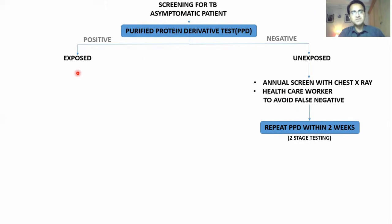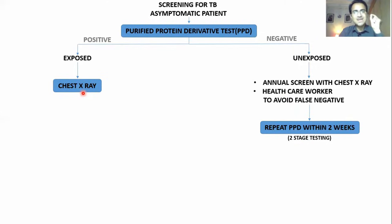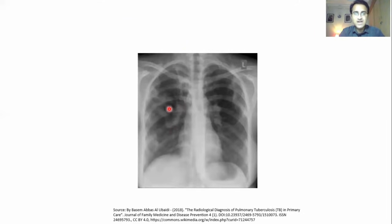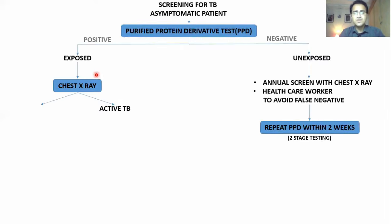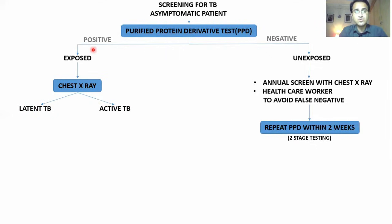If PPD is positive, it means the patient was exposed, but it does not mean the patient is actively having TB. To see whether this patient actively has TB, you go for a chest X-ray. On chest X-ray you can see hilar lymphadenopathies on both sides, opacities, and possibly a cavitary lesion in tuberculosis. If the chest X-ray is positive it means active TB; if negative it means latent TB — the patient was exposed but is not infectious right now.